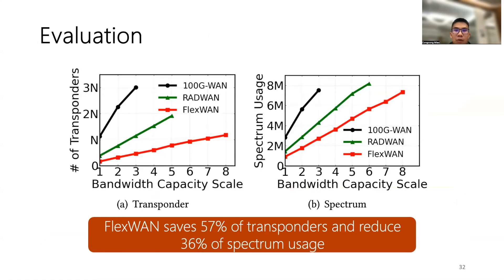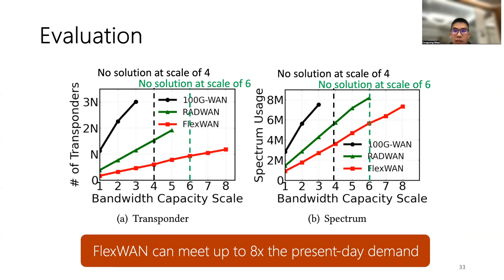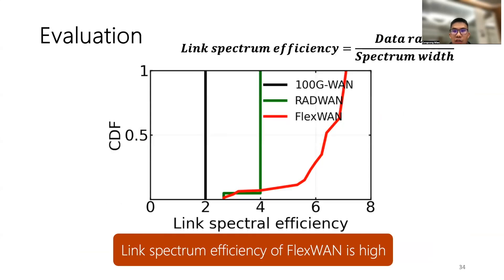We present the gains of FlexiOne. We obtain bandwidth capacity demands of each IP link in production and evaluate performance by increasing the bandwidth capacity scale, comparing FlexiOne with traditional optical backbones — 100G WAN and a reference baseline. FlexiOne is the most cost-effective, requiring the fewest transponders to provide the same bandwidth capacity. FlexiOne saves transponders by 57% at bandwidth capacity scale of 1 compared to the baseline, and spectrum usage is also reduced by 36%. FlexiOne supports bandwidth capacity scale up to 8 times, larger than the other approaches, and achieves the highest link spectral efficiency.